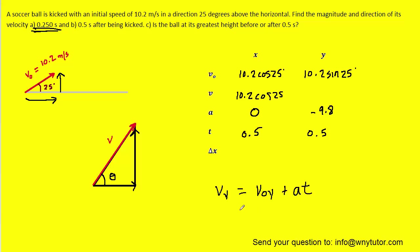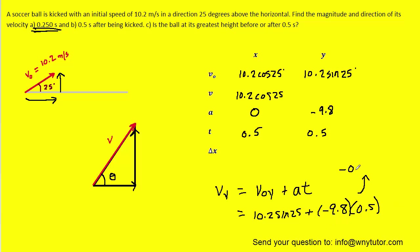Plugging in the initial velocity in the y direction, the acceleration, and the new time of 0.5 seconds, we get a value of roughly negative 0.589 meters per second for the final velocity in the y direction.